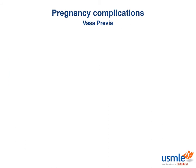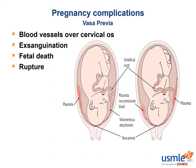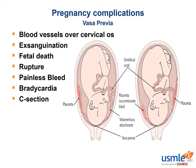Since vasa is Latin for blood vessels, vasa previa is a complication of pregnancy where the fetal vessels run close to the cervical os. Needless to say, this could cause exsanguination or severe blood loss and fetal death. It presents with membrane rupture, painless vaginal bleeding, and fetal bradycardia of less than 110 BPM. Emergency C-section is usually indicated in this case.